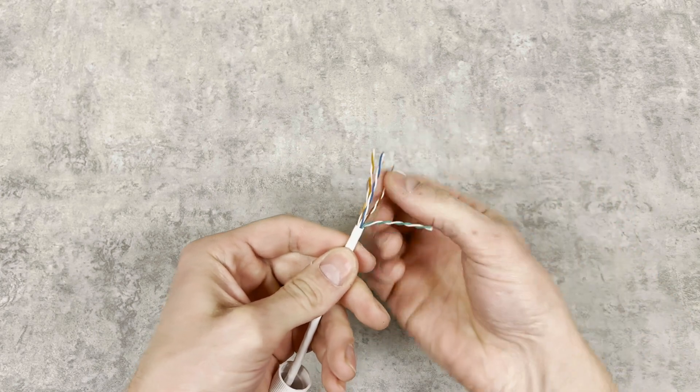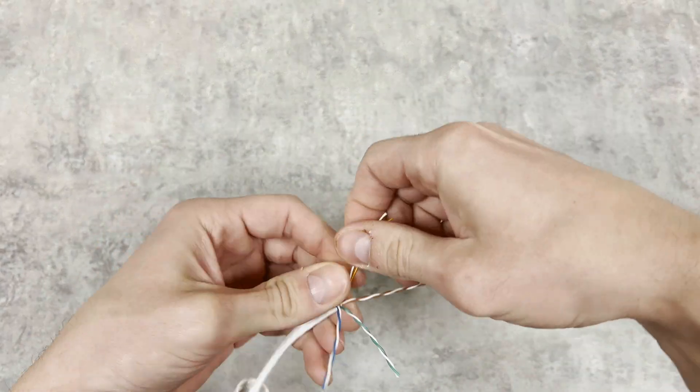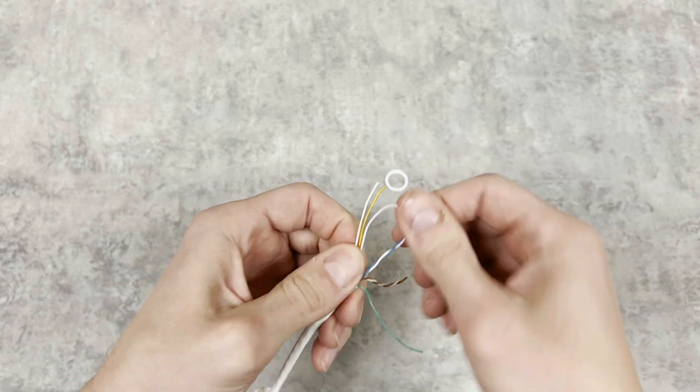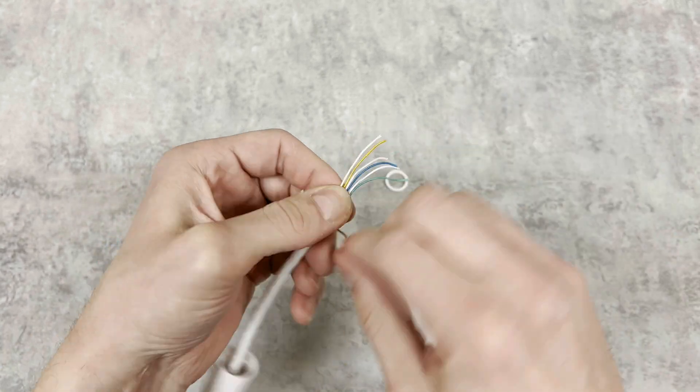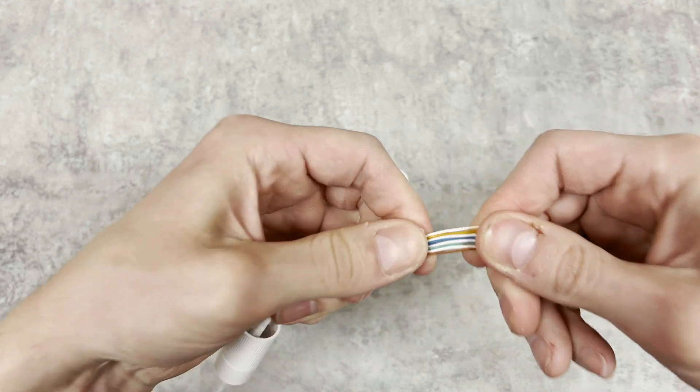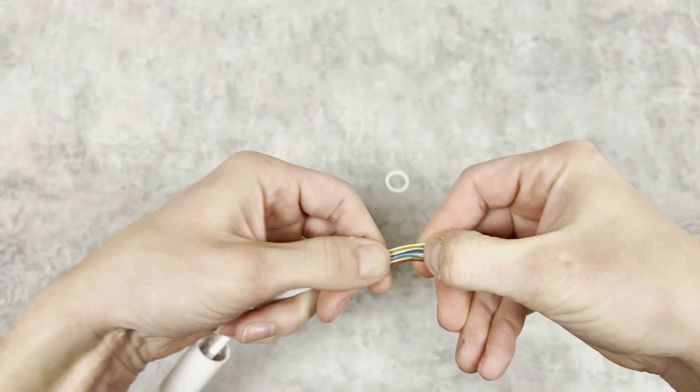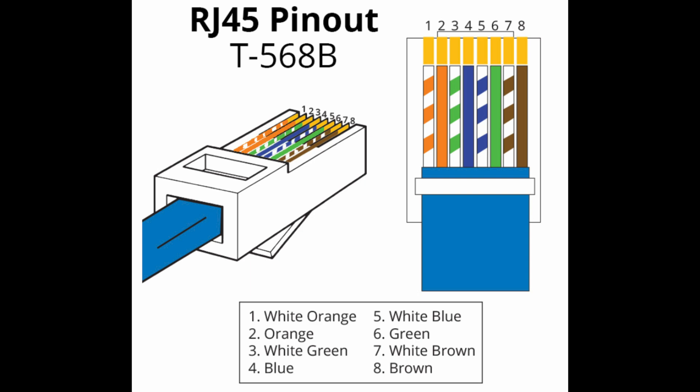I like to separate the twisted pairs first and then straighten them out. We're going to be terminating our cable with the T568B standard, and this is the recommended standard to make sure that the cables can operate at the optimal speeds. I'm going to put a diagram up on the screen so you can see exactly how to terminate this end.